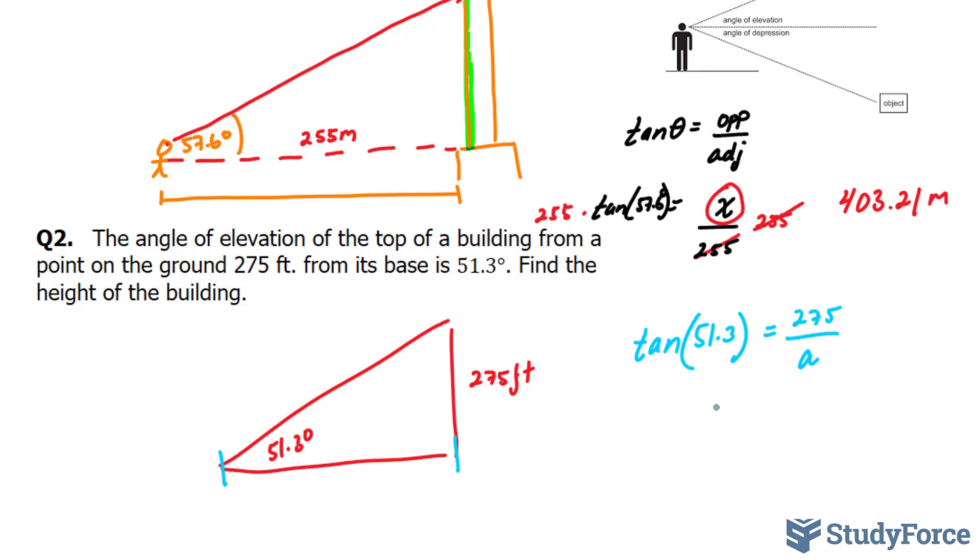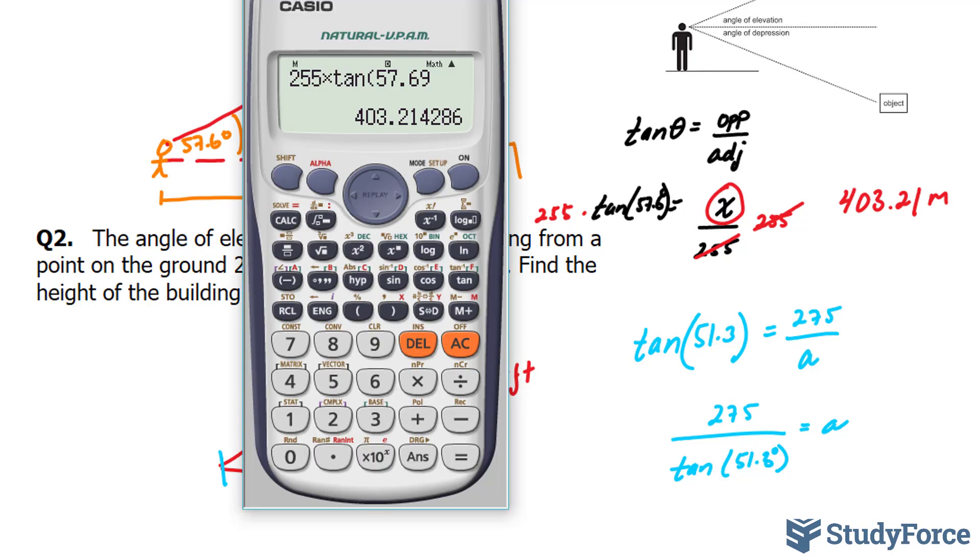To do this, we're going to take 275 and divide it by tangent 51.3 degrees. This gives us an a value. Let's use our calculator.